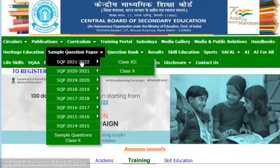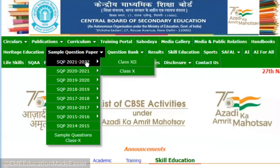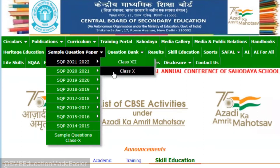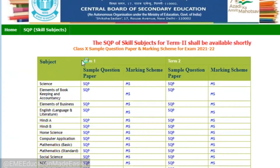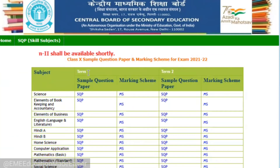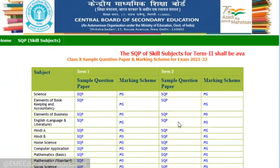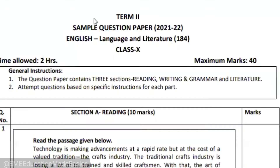Here you can see SQP, that is sample question paper. SQP for 2021-2022 is available for both class 12th and class 10th. Currently I'll be showing you for class 10. When you click on class 10, you would be taken to another page where sample question papers are uploaded for term one and term two. You've already seen them for term one. Now here are the sample question papers for term two. Let me open the question paper for language and literature — this is the page that will open.